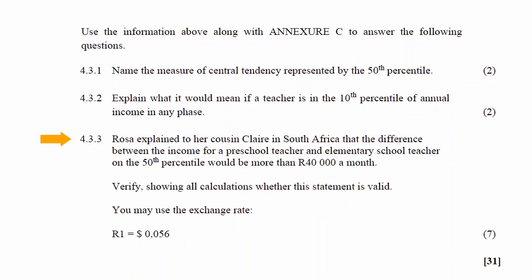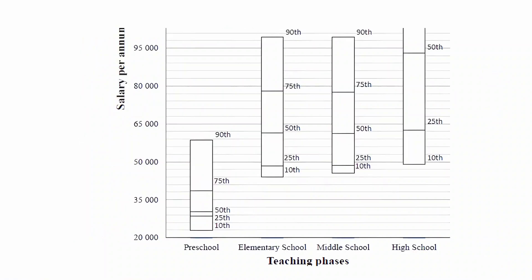In question 4.3.3, Rosa explained to her cousin Claire in South Africa that the difference between the income for a preschool teacher and an elementary school teacher at the 50th percentile would be more than 40 000 rand a month. You have to verify, showing all calculations, whether the statement is valid. You may use the exchange rate: 1 rand equals 0.056 US dollars. On the box and whisker plots, the 50th percentile values for preschool and elementary school teachers are indicated by their respective lines.